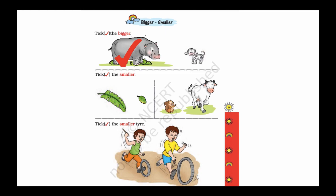Second question: take the smaller. We have two leaves and we have to compare the size. This leaf is smaller than the other one. Then we have two animals — one is a squirrel and the second one is a cow. The squirrel is smaller than the cow.